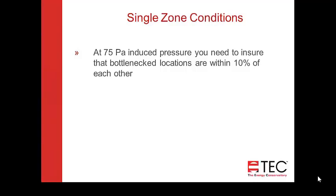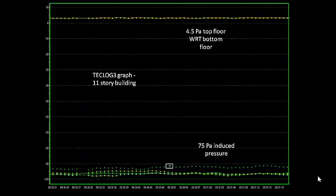At 75 pascals, you want all the pressures in the building to be within 75% of each other. As an example, we did some repeatability testing on an 11-story building and set up all the blower doors on the main level. We had two blower doors set up in a stairwell about half a flight down, and two more at the main level of the building in the front. We had an 11-story building with about 30-35 degrees outside. At the bottom of the building we were seeing 95 pascals, with a baseline of about 20 pascals, giving an induced pressure of 75.